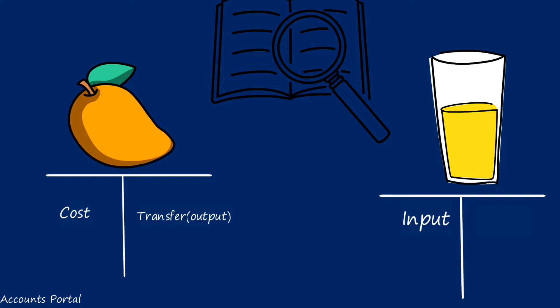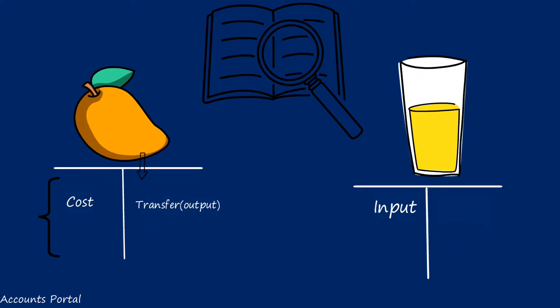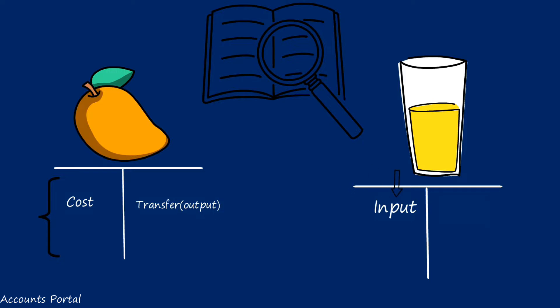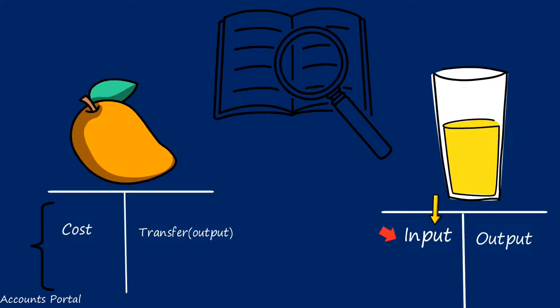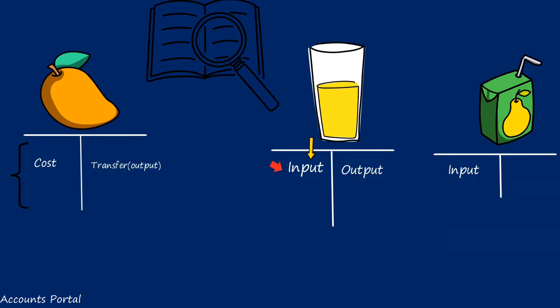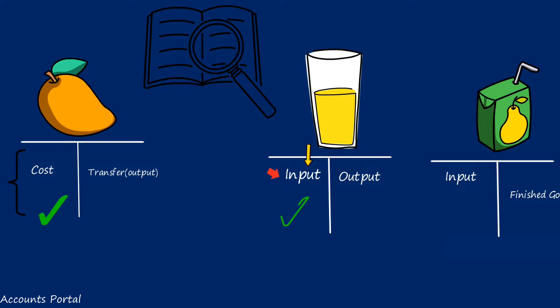The output transferred from one process to the next is recorded as: debit Process Two Account, credit Process One Account. The cost incurred in Process One gets carried to Process Two. In the last process, we calculate the cost of finished goods, which accumulates over three or four processes. What is output for one process is input for the next — never get confused by these terms.